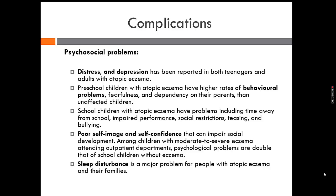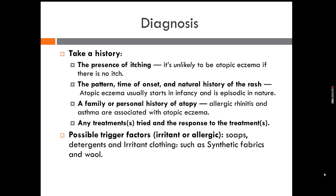Complications also include psychological and psychosocial problems. Distress and depression have been reported in teenagers and adults with atopic eczema. Preschool children with eczema have higher rates of behavioral problems such as fearfulness and dependency on parents. School children with eczema experience time away from school, impaired performance, social difficulties, teasing, and bullying, which can cause poor self-image and impair social development. Among children with moderate to severe eczema, psychosocial problems are double that of school children without eczema. Sleep disturbance is also a major problem for people with atopic eczema and their families.